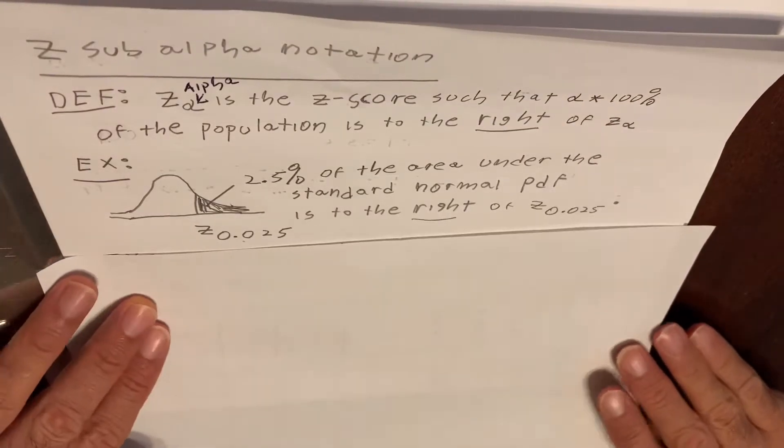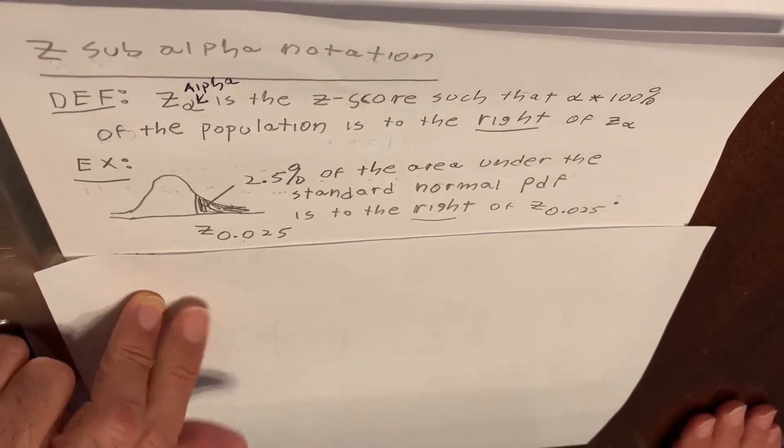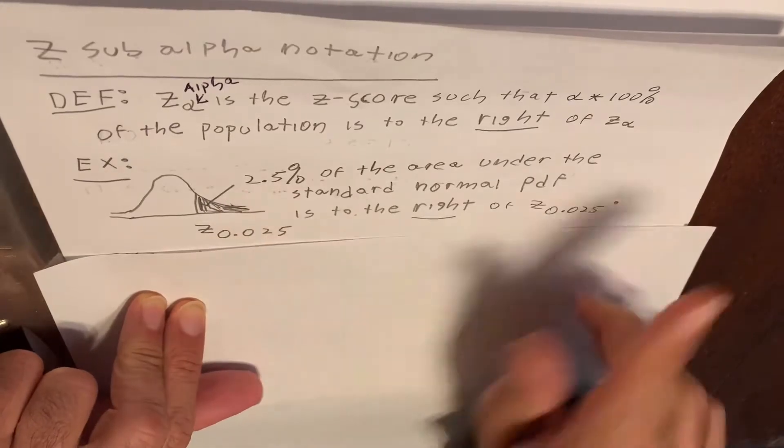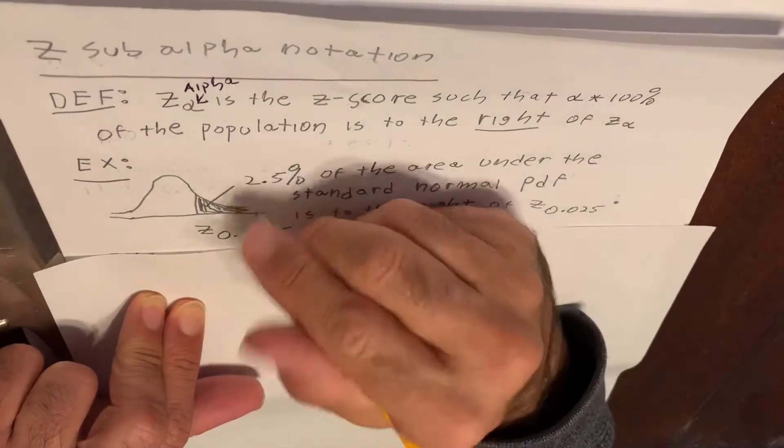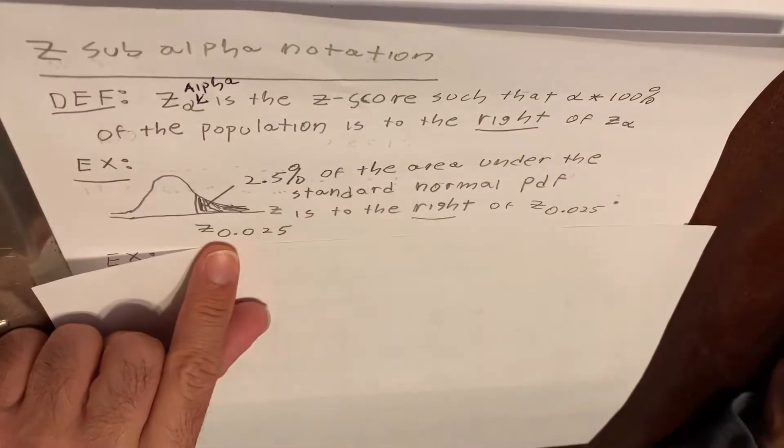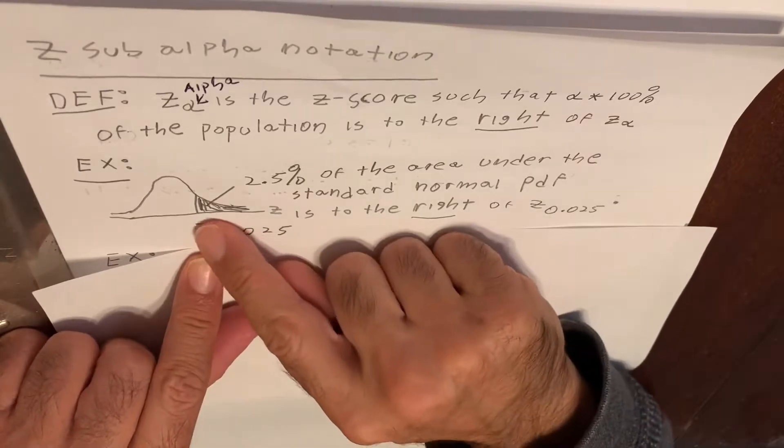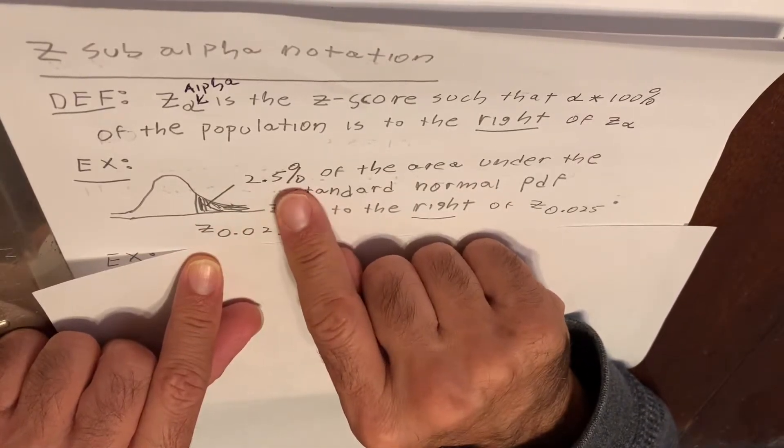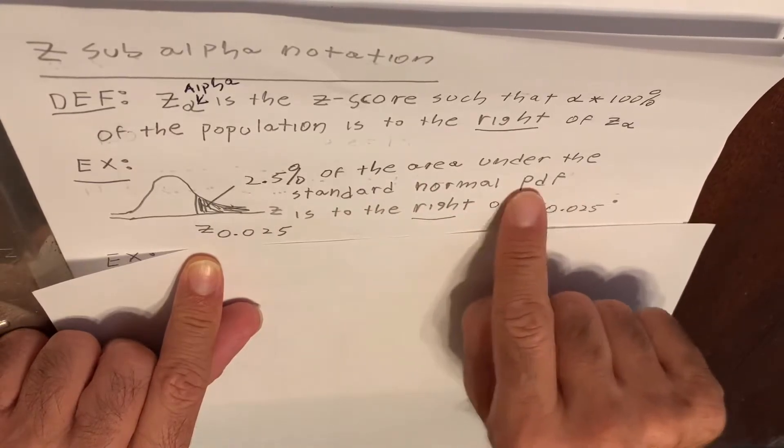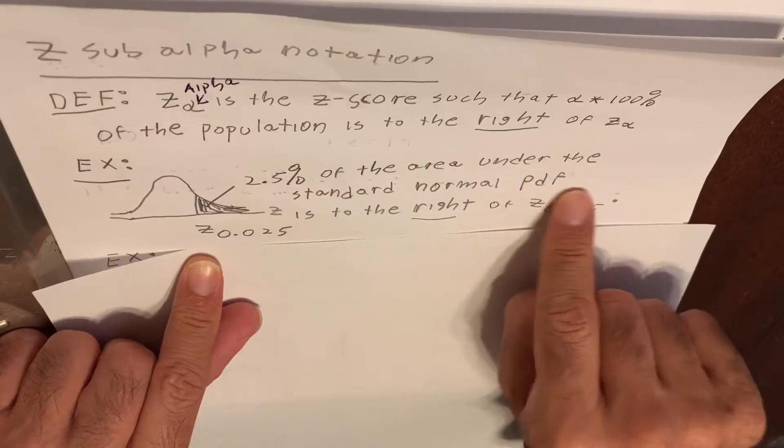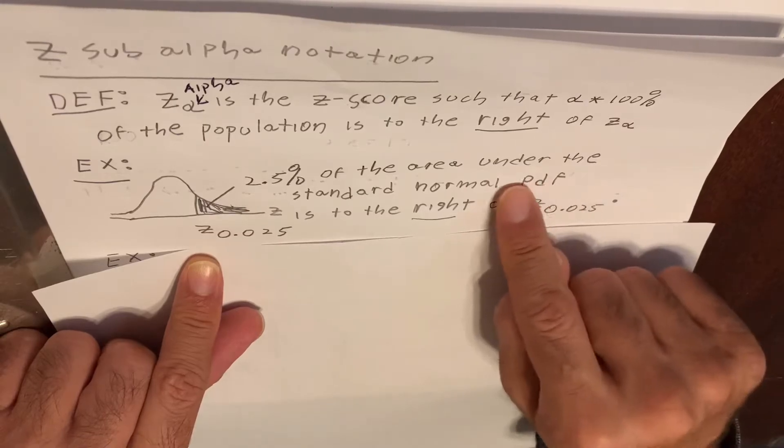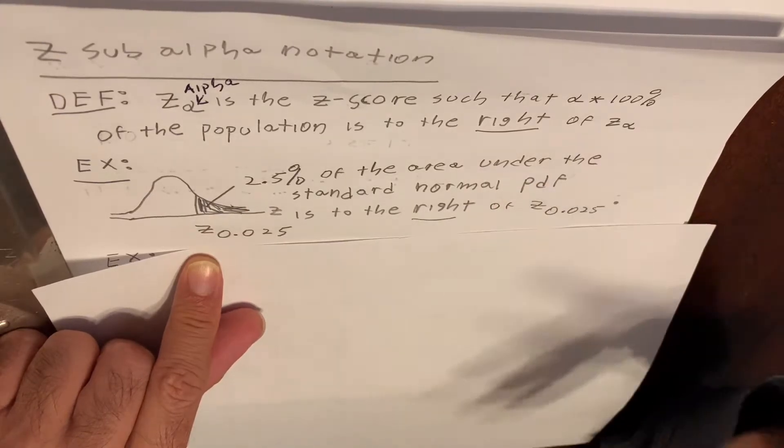Here's a little picture that I drew for you. Let's look at a little example. If we have a standard normal distribution, which is symbolized by Z, and we have a Z score that has 2.5% of the area under the standard normal, it's called a PDF, a probability density function. Some professors just call it the normal curve, but this is called a PDF if you want to be accurate.